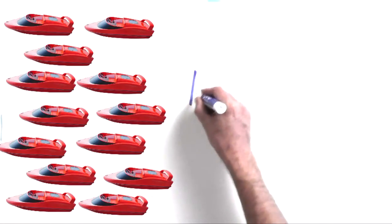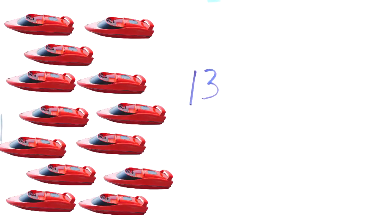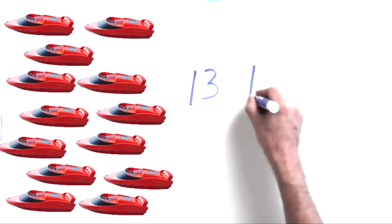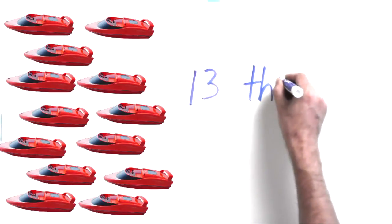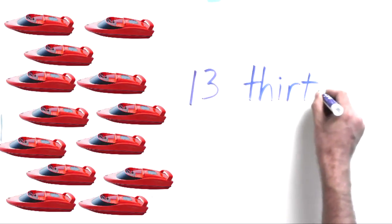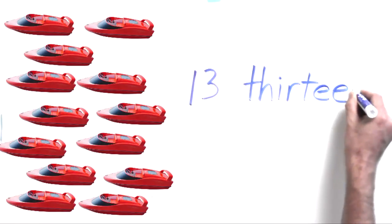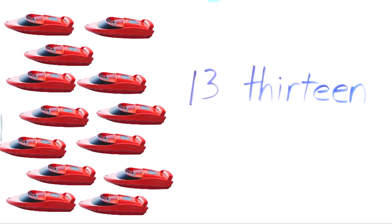There are 13 boats on the screen, 13 boats in our lake. So here we go, 13 boats. Here's how we write the number 13, a 1 and a 3. Now here's how we write the number 13. Thirteen. T-H-I-R-T-E-E-N. 13.